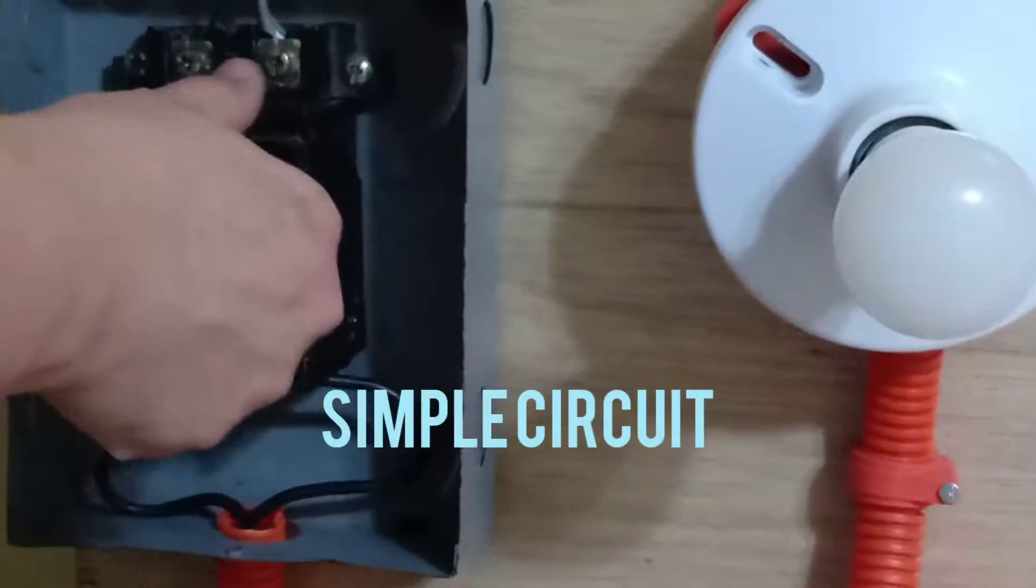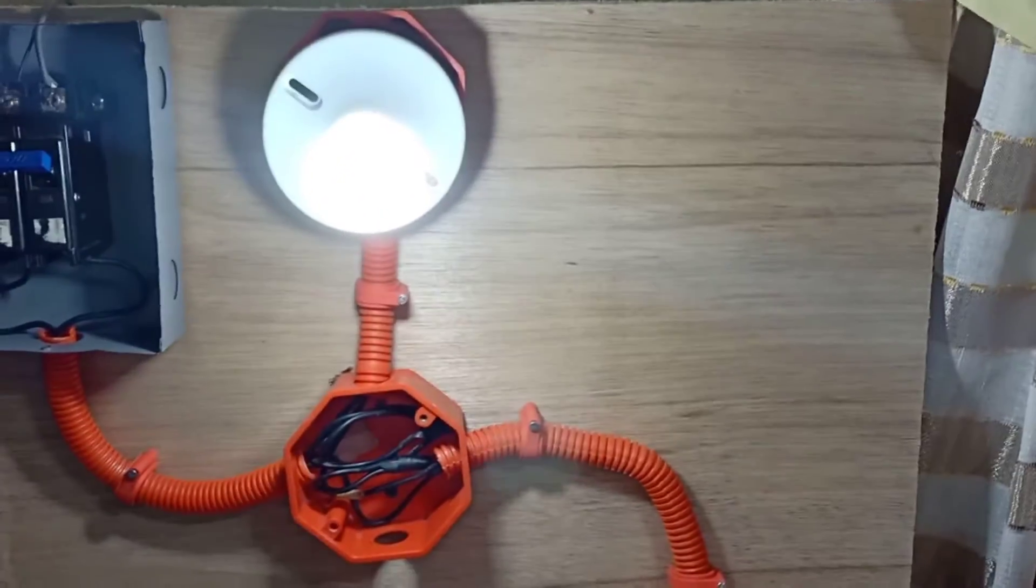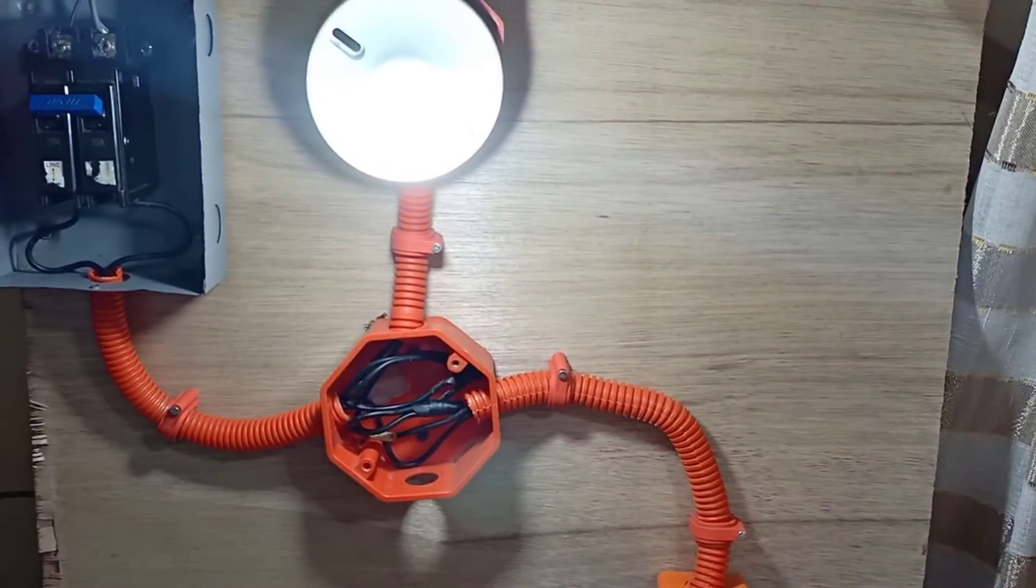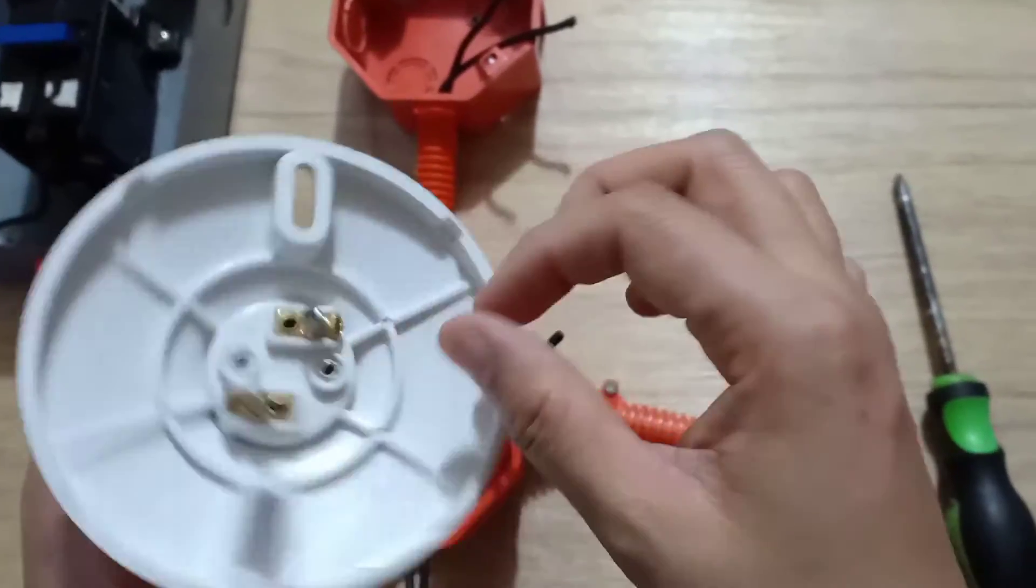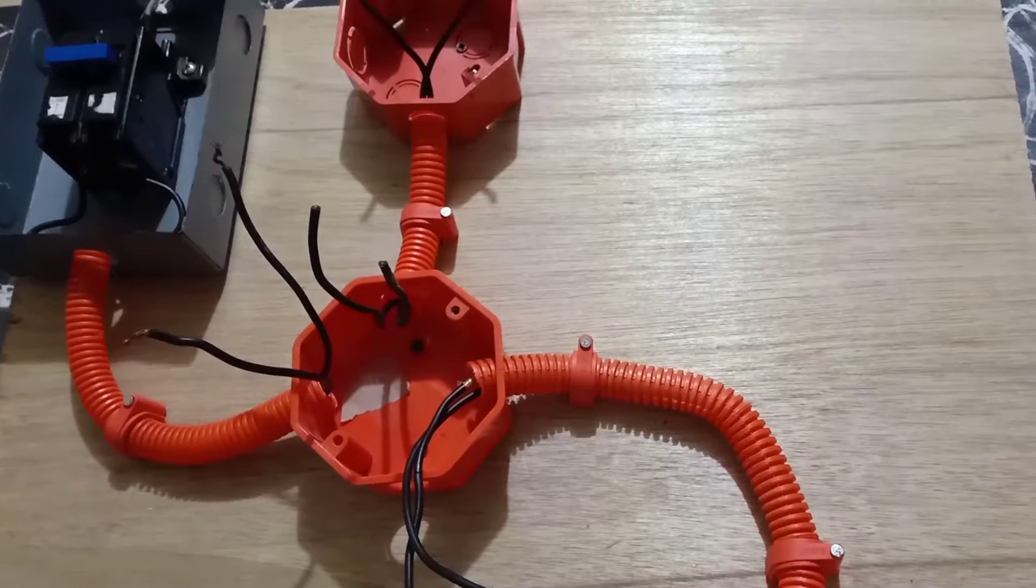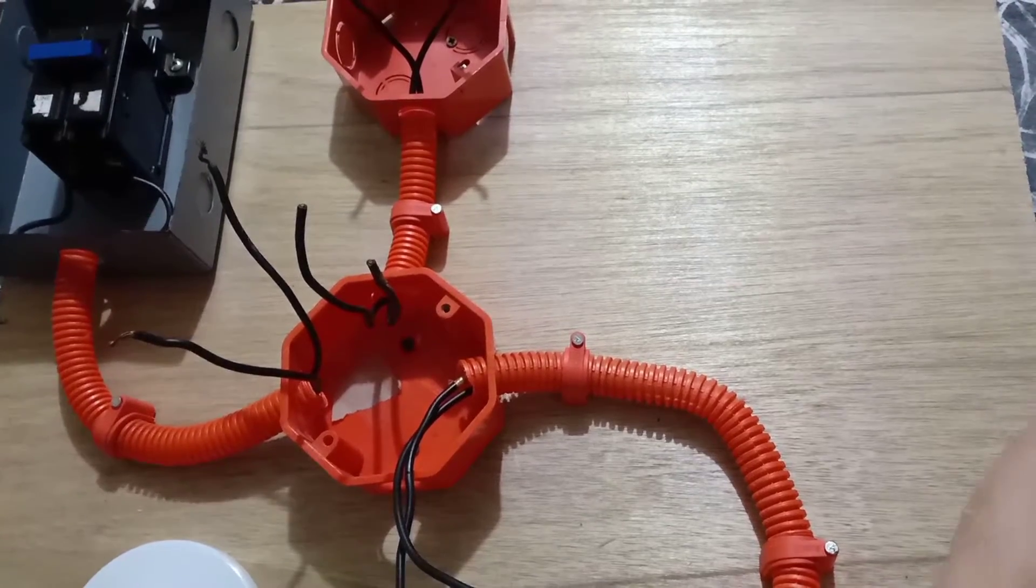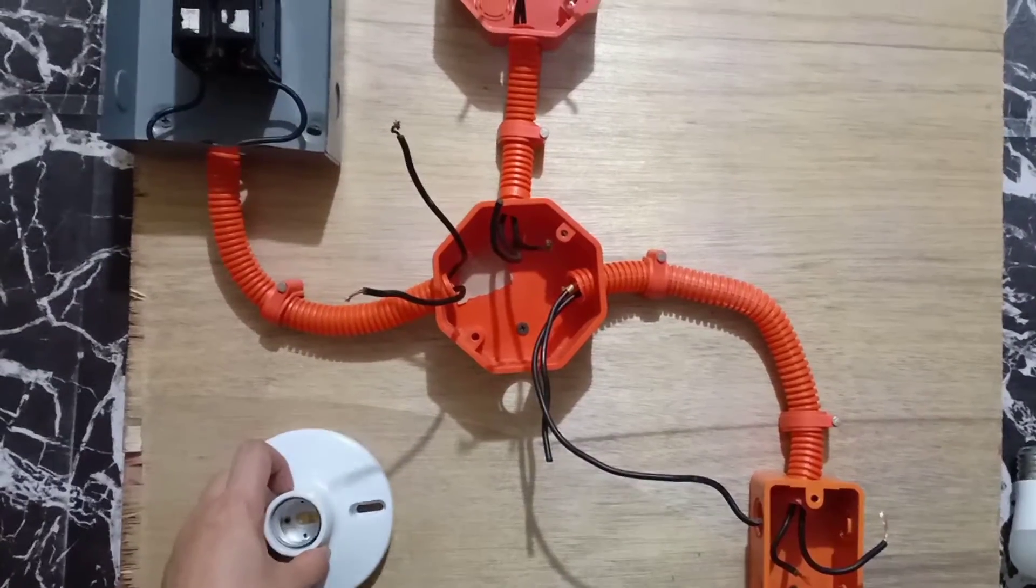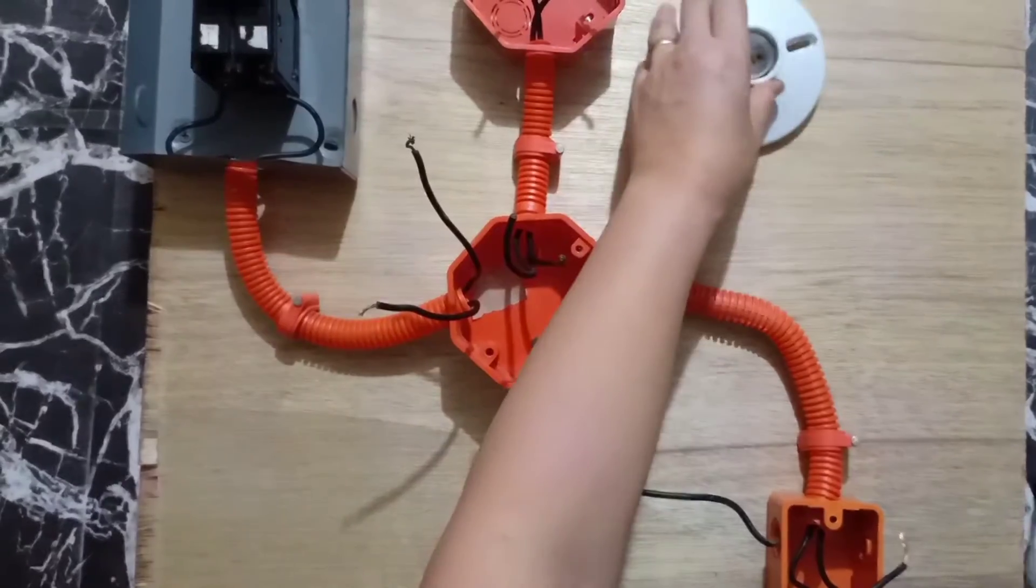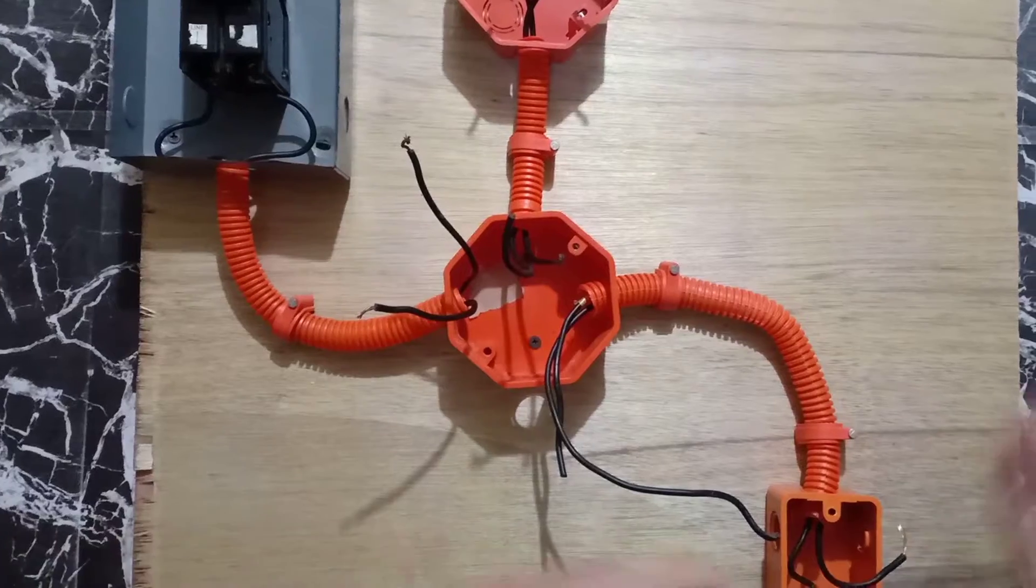Let us try if this will work. It's working again. Okay, this time I am going to show you how to do the simple circuit. Before we start, please make sure that the power source is off. We will be needing the following: we have here the lamp holder, our lamp, and the switch. I already put also the wires.